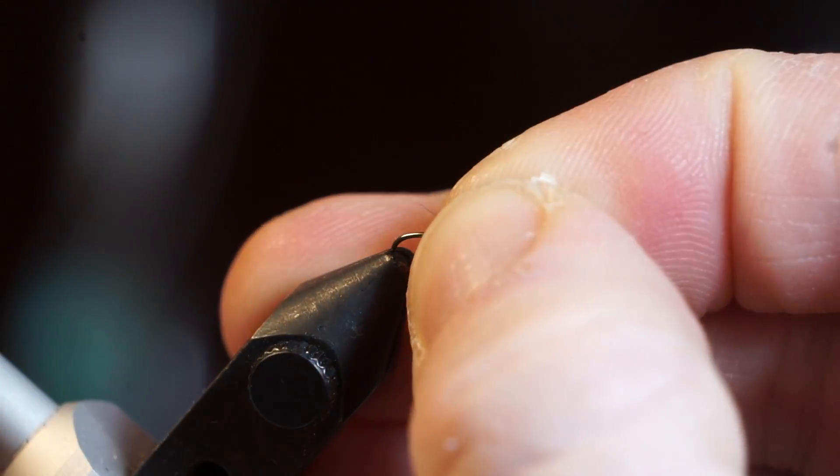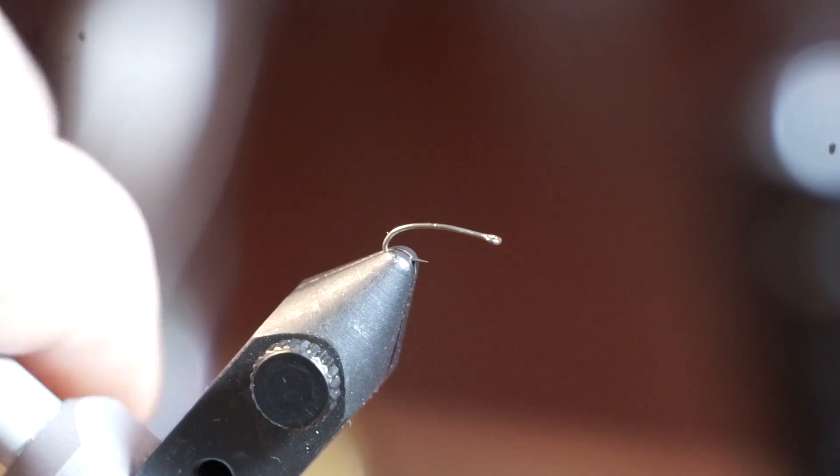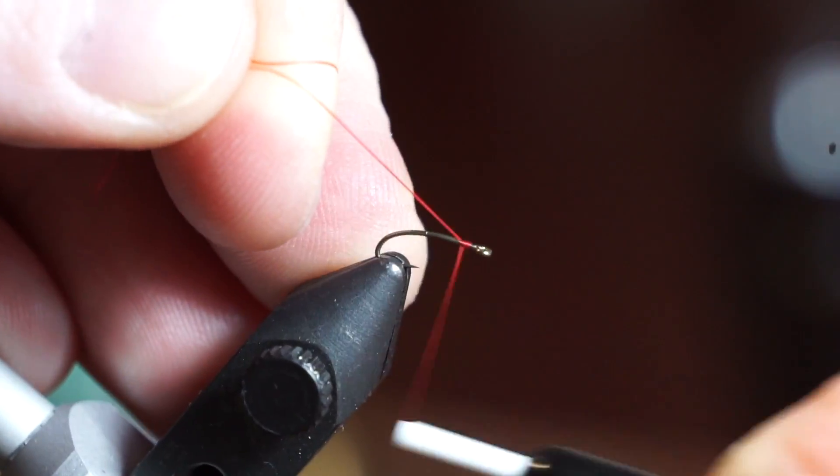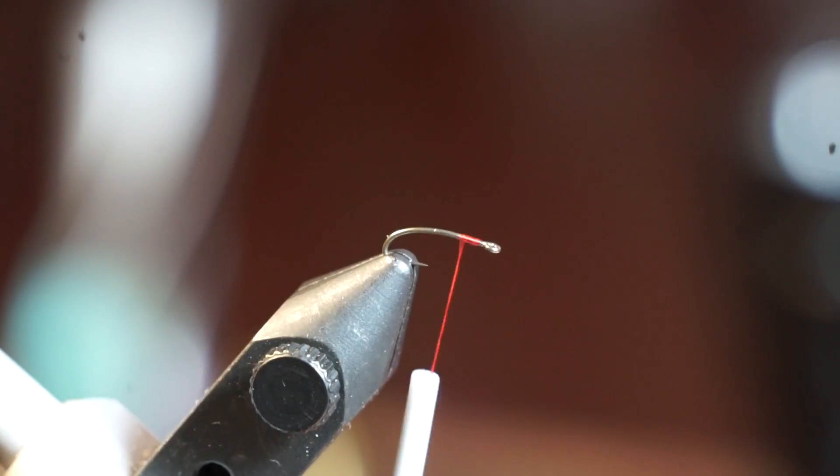The hook I am using is a Daiachi 1270 in size 20 and the thread is UTC Ultra Thread 70 in red. Start your thread at the eye of the hook.